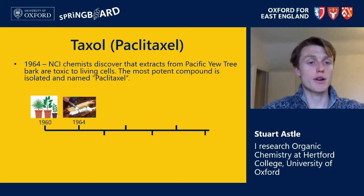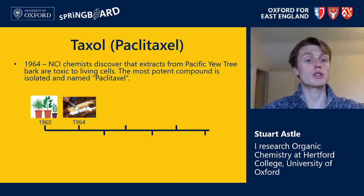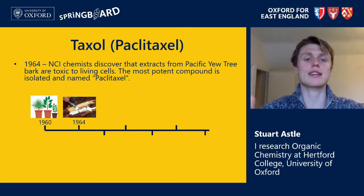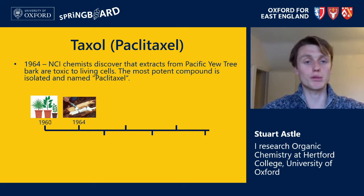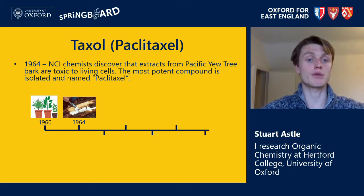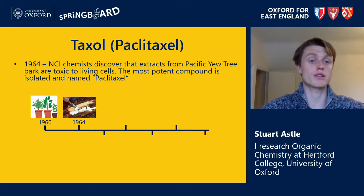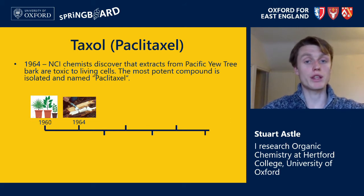A few years after this program started, chemists at NCI discovered that extracts from the Pacific yew tree bark were toxic to living cells. You might wonder why that's useful — well, cancer is the out-of-control growth and division of cells in the human body, leading to tumors which quite often can lead to death. So if we want to treat cancer in a patient, we need a way of killing those cancer cells. It was therefore quite a useful finding that a chemical compound within Pacific yew tree bark could be toxic to living cells.